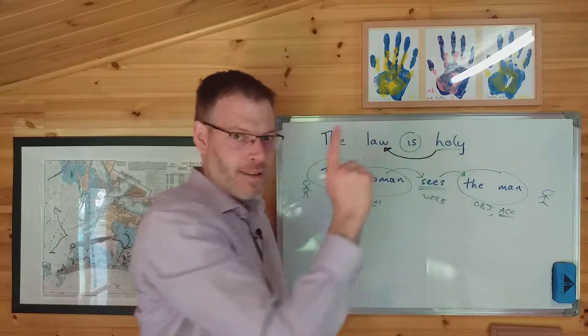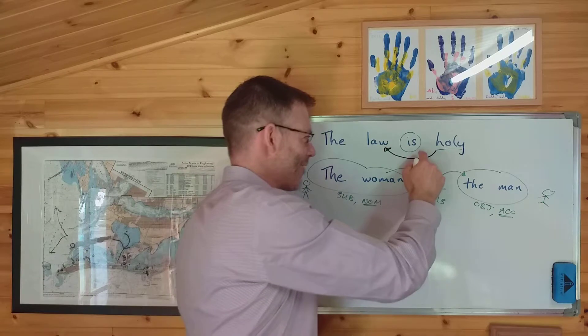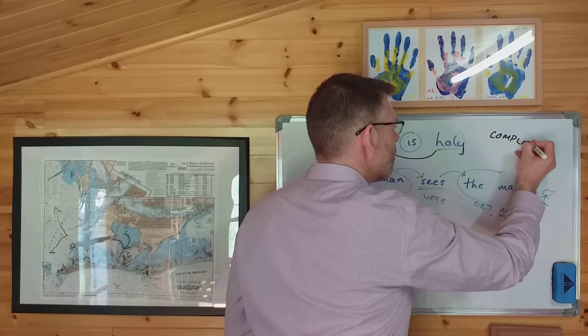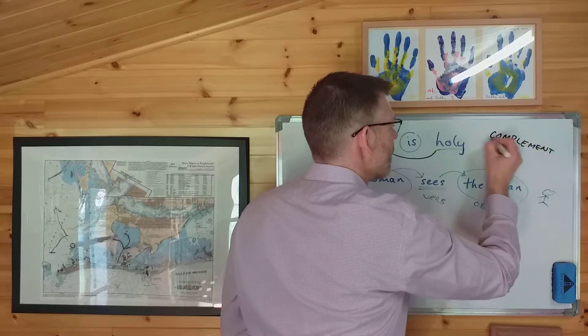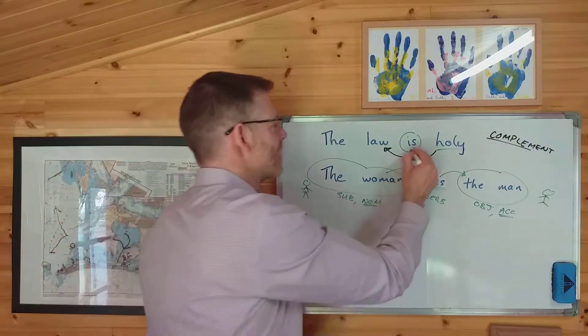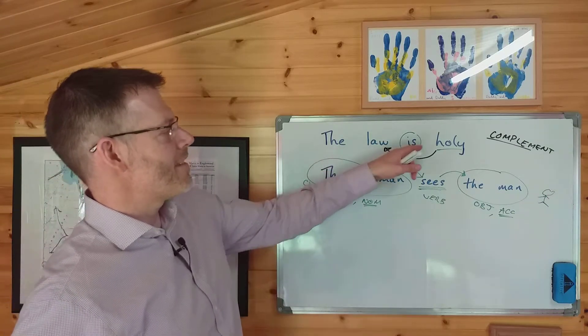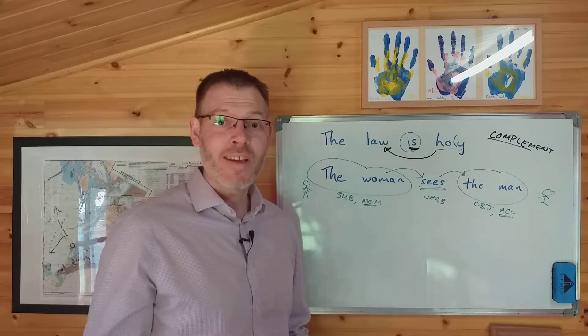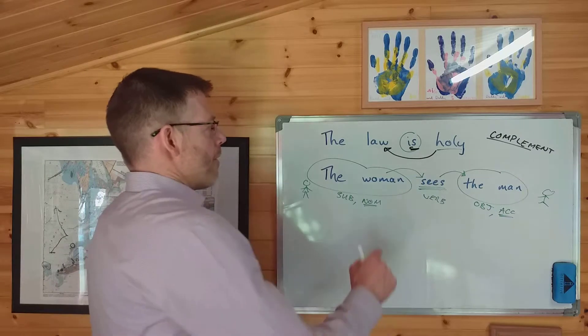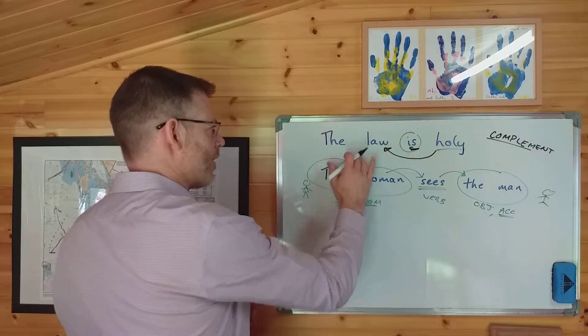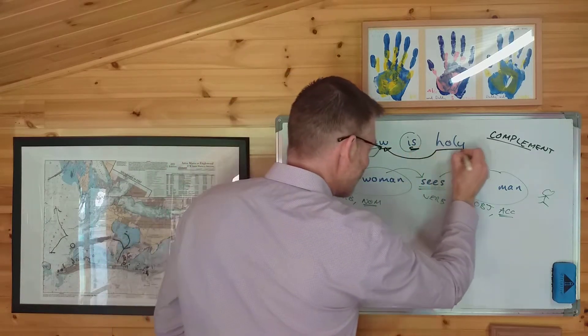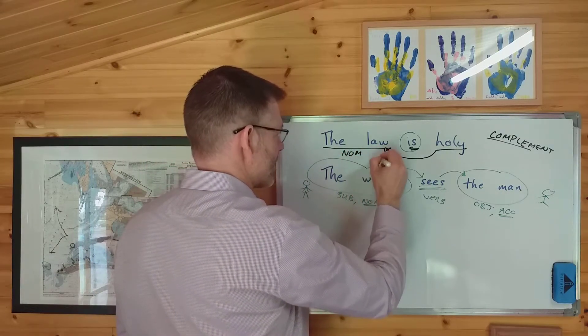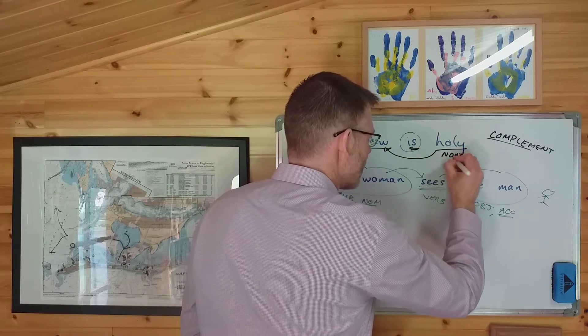And this, ladies and gentlemen, is not an object. The verb is doesn't take an object. It takes what grammarians call a complement, so-called because it completes the idea begun by the subject and the verb. The law is holy. Now, that's the linguistic, conceptual aspect of things. The reason it matters grammatically is because holy is not a different thing from the law, this and this both go in the same case. And of course, this will be in the nominative case, because it's the subject. This also goes in the nominative case.